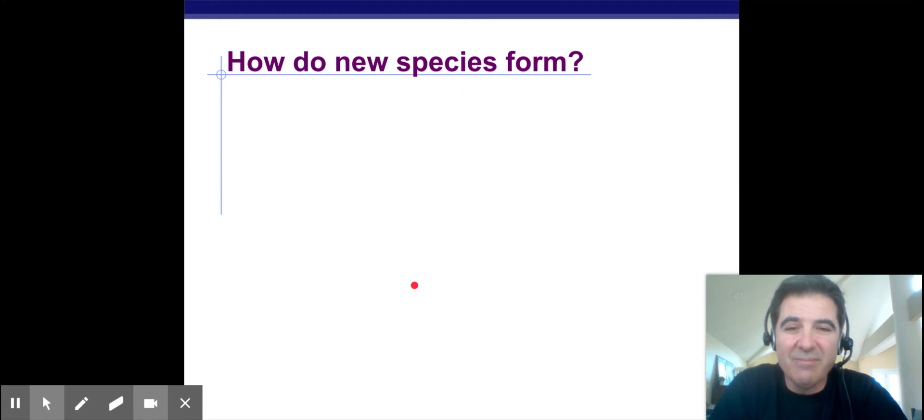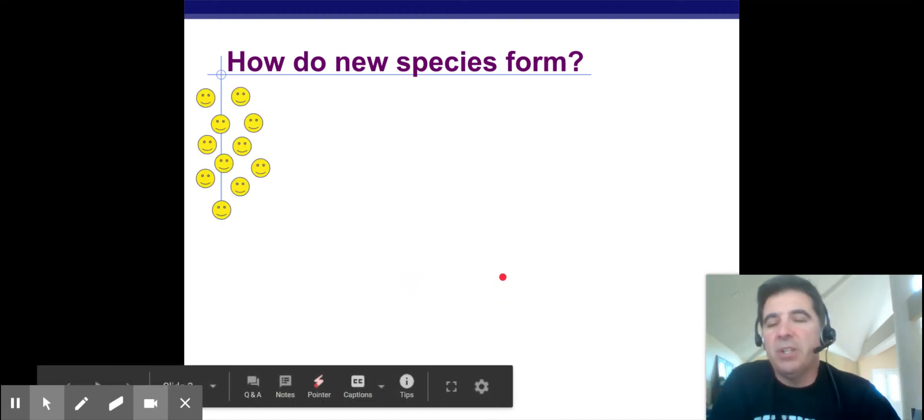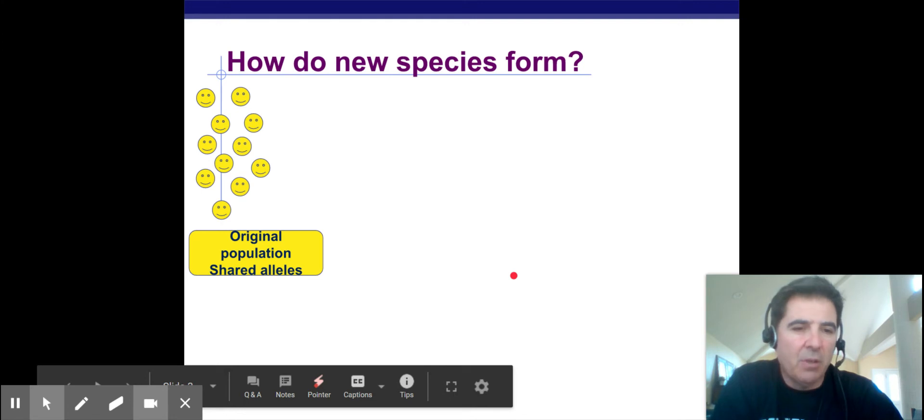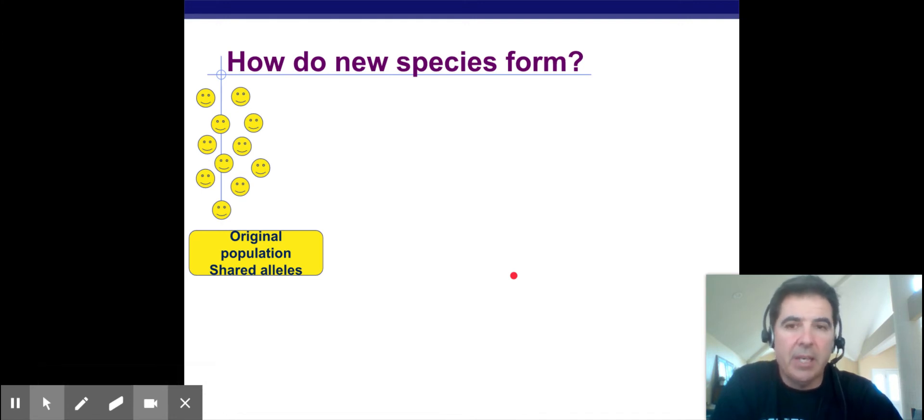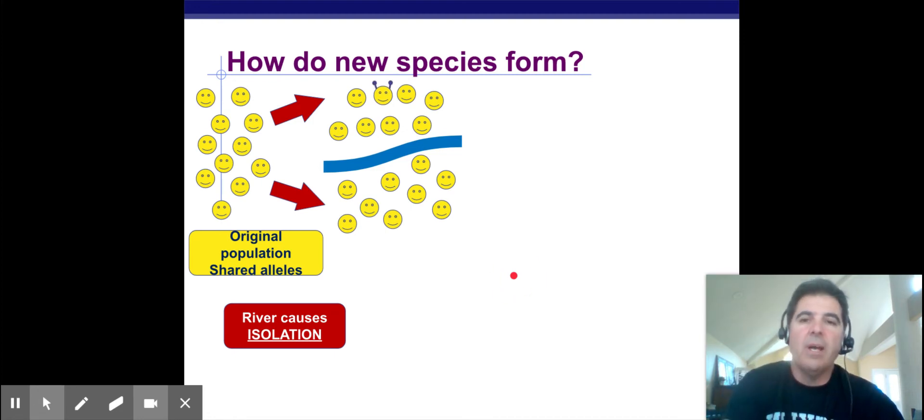Okay, how do new species form? Let's take a look at this. Here's members of a species, they're the smiley face species, and the original population all shares alleles. So they're intermixing and all the genes are kind of spread out, and you have variation in that mix, but they're all kind of together. So let's say a river forms between the population and it causes what's called isolation, which means one side is isolated from the other. And let's say this river is so big that they cannot get across, they can no longer interbreed. It's not possible.